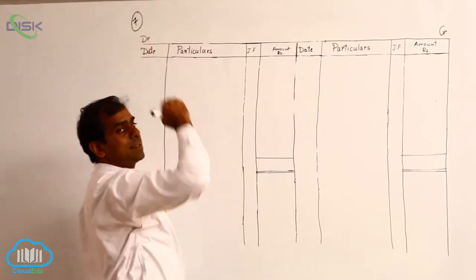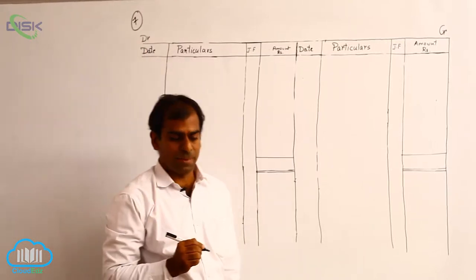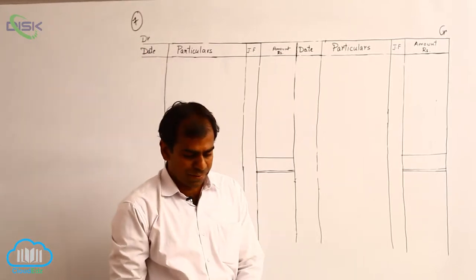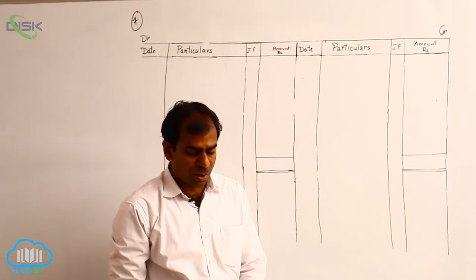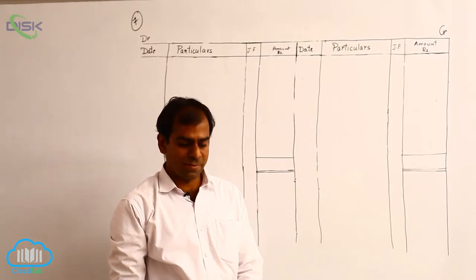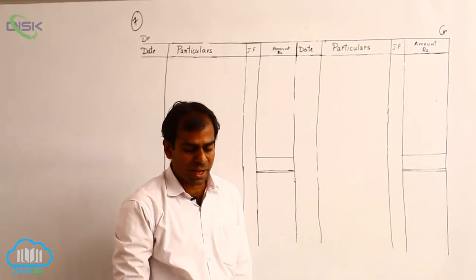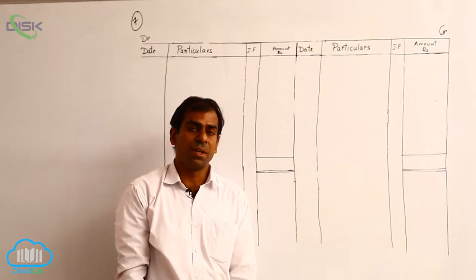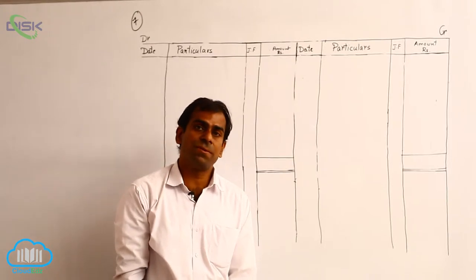We are going to discuss the 7th problem, which states that from the following information, prepare Praveen's account as on 31st March 2014.